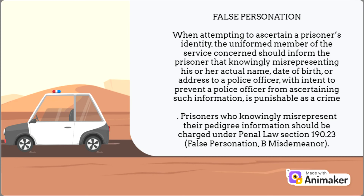False Personation: when attempting to ascertain a prisoner's identity, the uniformed member of the service should inform the prisoner that knowingly misrepresenting his or her actual name, date of birth, or address to a police officer, with intent to prevent a police officer from ascertaining such information, is punishable as a crime. Prisoners who knowingly misrepresent their pedigree information should be charged under Penal Law § 190.23, False Personation, a B Misdemeanor.